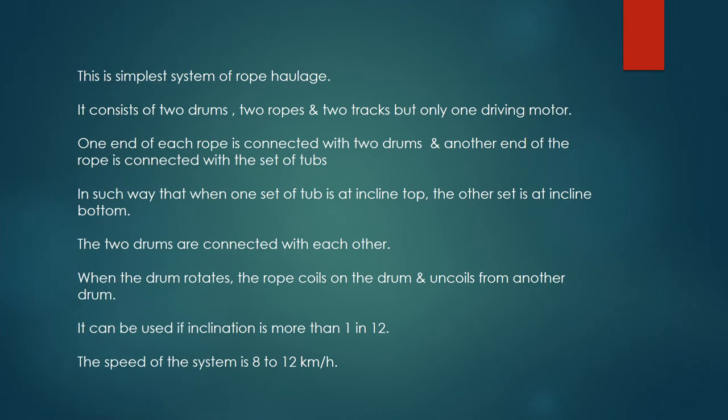This is the simplest system of rope haulage. It consists of two drums, two ropes, and two tracks, but only one driving motor. One end of each rope is connected with two drums, and the other end of the rope is connected with a set of tubs, in such a way that when one set of tubs is at the incline top, the other set is at the incline bottom. The two drums are connected with each other.